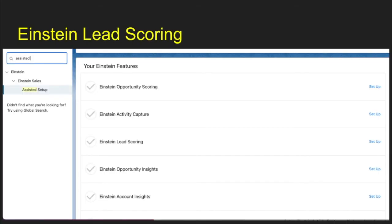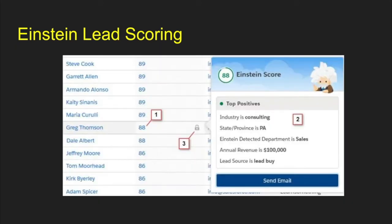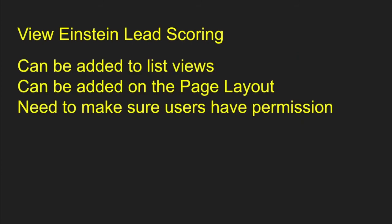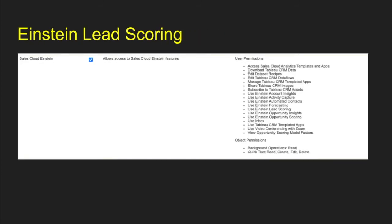The first thing we can do is set up Einstein lead scoring. You do have to go to the assistant setup and turn it on. Once it's on, you get something that looks like this. On the list views, you can add in the score, and on the record you can get the Einstein score on the lead as well. The higher the score, the better the lead is. It can be added to list view and to a page layout. You do need the Sales Cloud Einstein user permission assigned to them to do that.